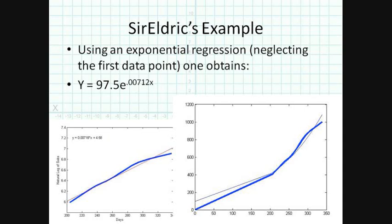So after running some numbers, it turns out that the original equation for a number of subs y is roughly 97.5 times e to the 0.00712x. Again, where x is the number of days that have passed. So on the right, plugging that back into our original data values, we can compare our estimated graph versus the actual data.